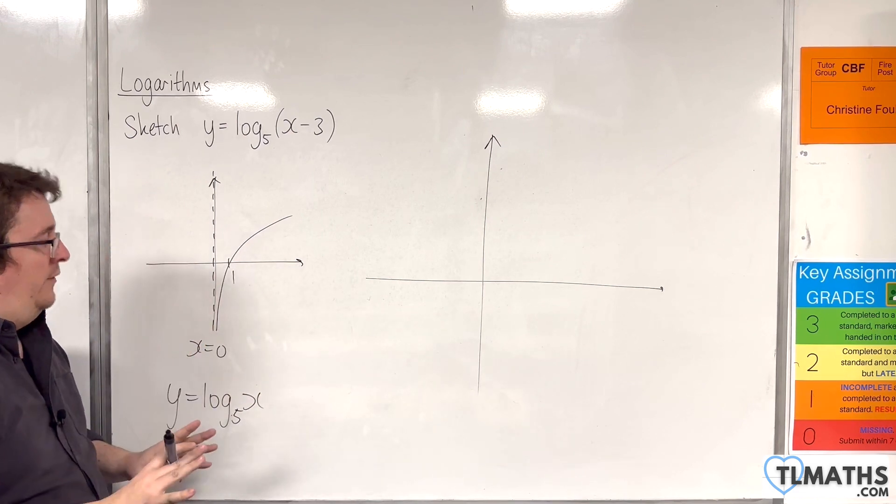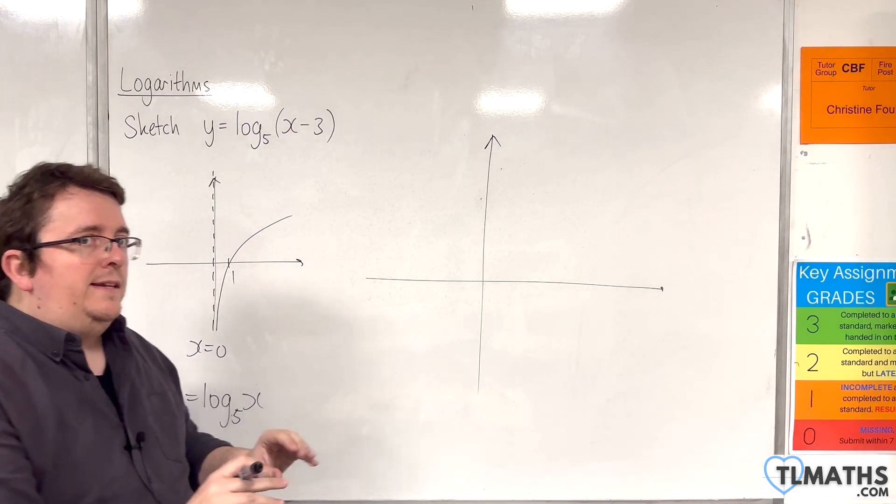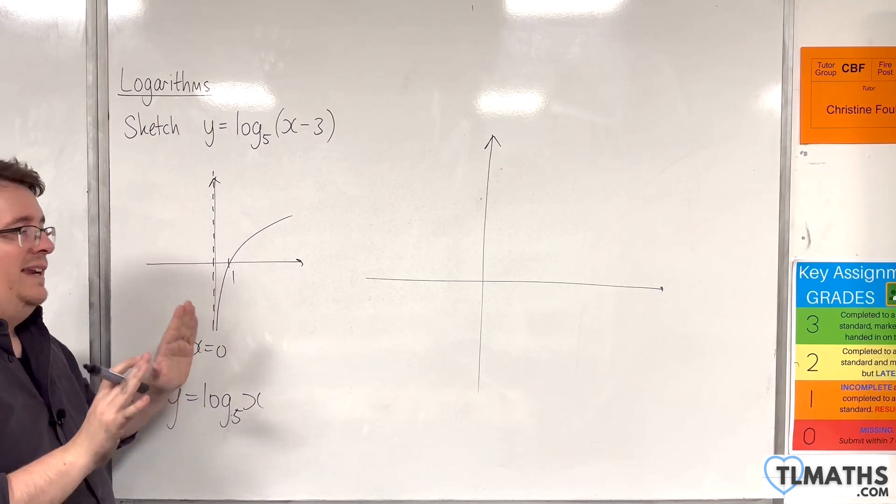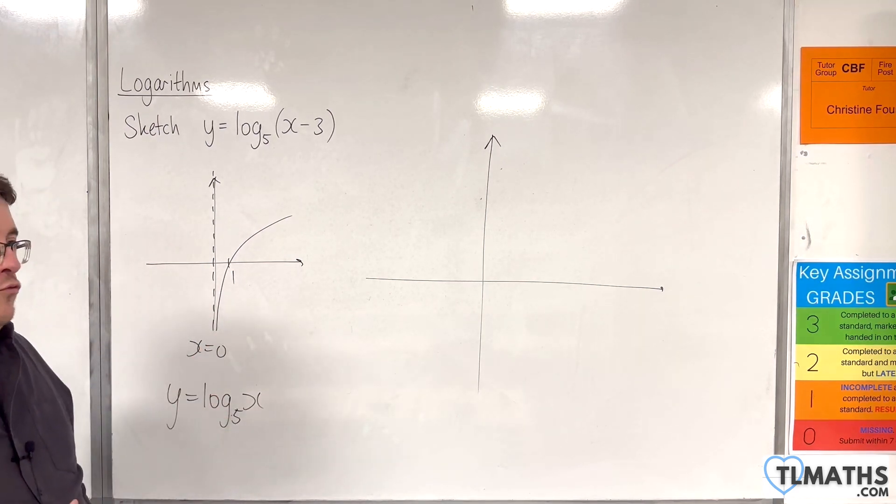But if you replace that x with x minus 3, it translates it 3 units to the right. And that means that the vertical asymptote will also translate 3 units to the right.